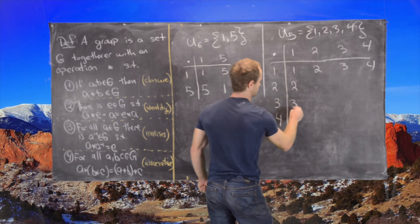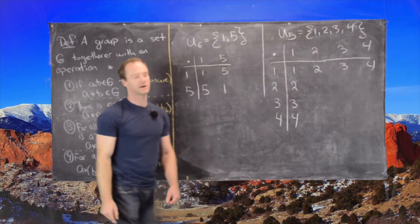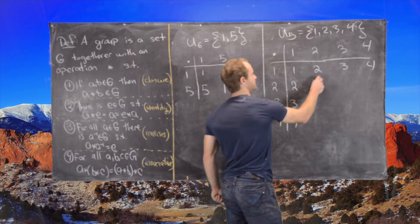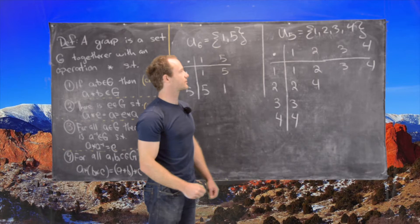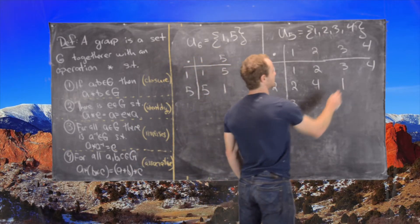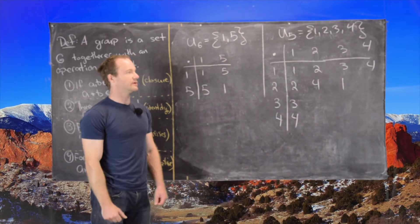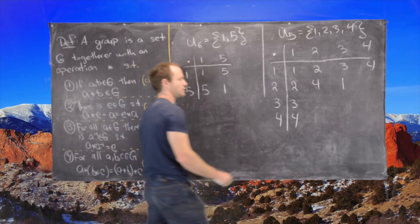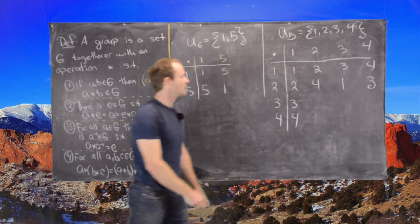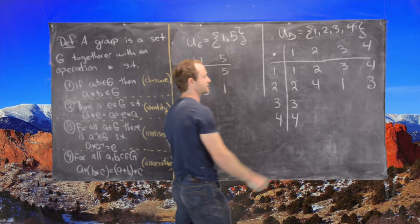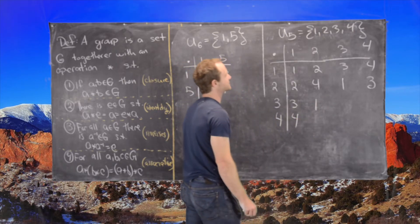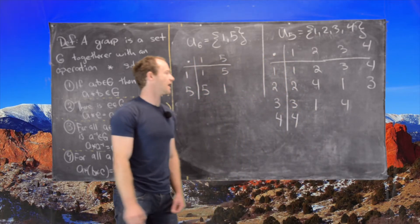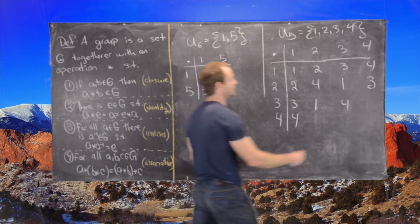I'll fill in the easy row and column immediately using the fact that 1 is the identity. Now 2 times 2 is 4, 2 times 3 is 6 which is 1, so 2 and 3 are inverses of each other. 2 times 4 is 8 which is 3. 3 times 2 is 6 which is again 1, 3 times 3 is 9 which is 4, and 3 times 4 is 12 which is 2 mod 5.